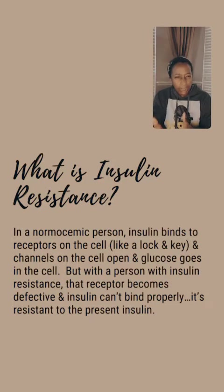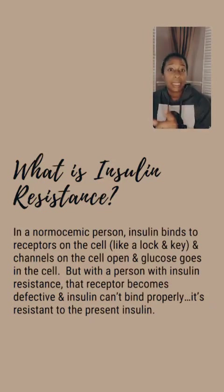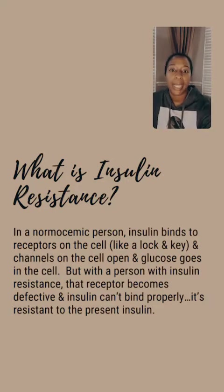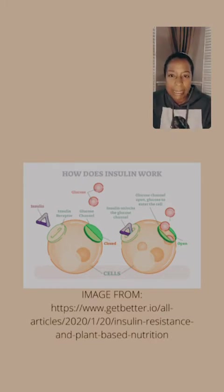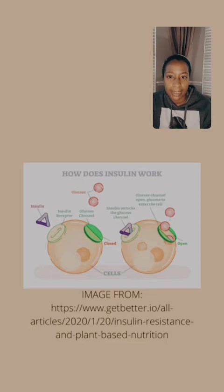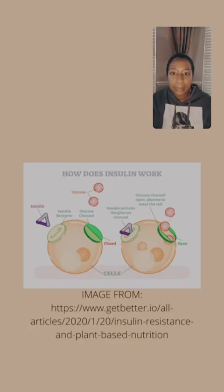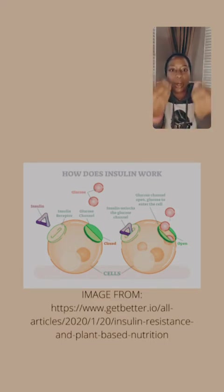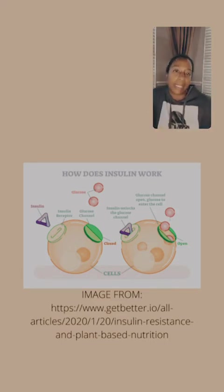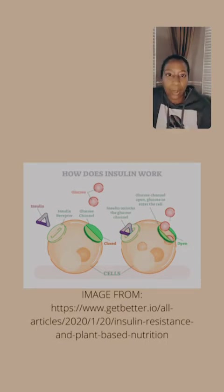To give you a visual, I'm going to show you a diagram. That purple triangle there — that's insulin — and it goes into that receptor, it opens up that glucose channel, and glucose can go in. That's how insulin works. But with insulin resistance, that triangle cannot bind to that receptor properly.